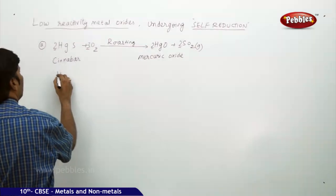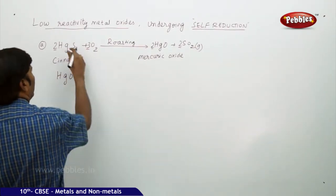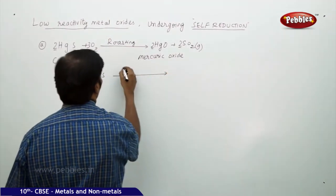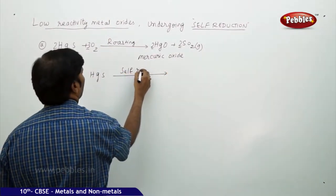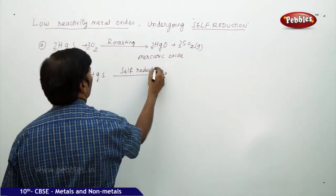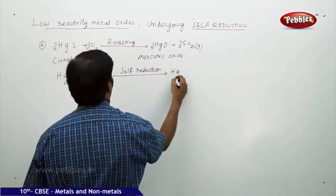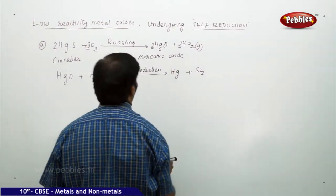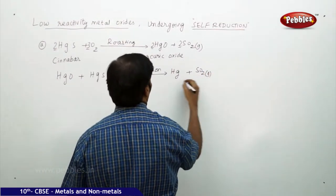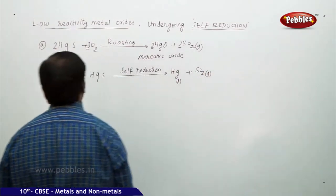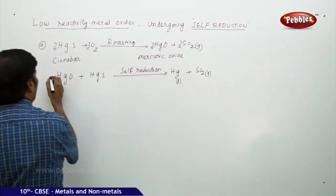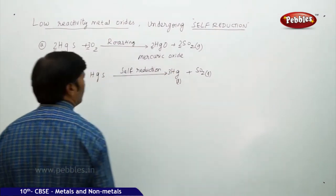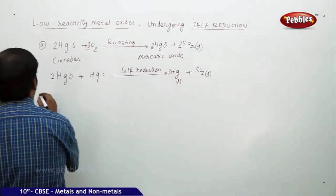This mercury oxide in turn again reacts with the same mercury sulfide, undergoing self-reduction, to give mercury plus sulfur dioxide gas. To balance the equation, take 2 on the HgO side and 3 on the SO₂ side. This is called self-reduction.